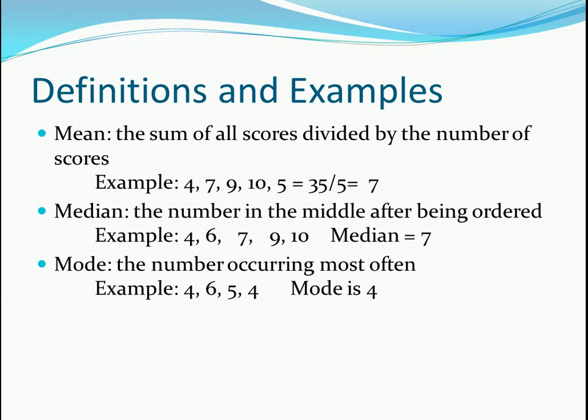Here are the definitions and examples of your three measures of central tendency. The mean is the sum of all scores divided by the number of scores. So in this example, if you add all five scores up, you get 35 divided by 5, and your mean is 7.